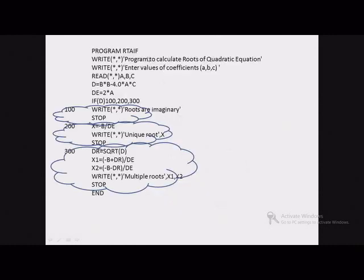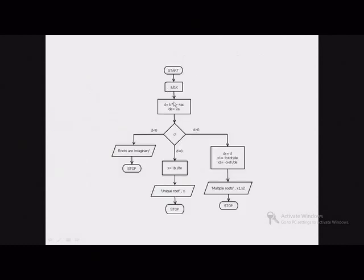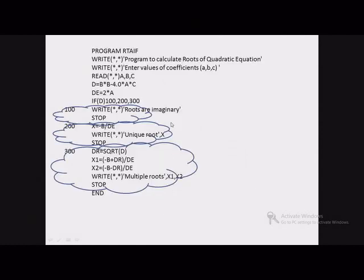Let us move to the program. This program demonstrates how to use the arithmetic if statement — same as the flowchart. We display the message 'Program to calculate roots of a quadratic equation,' then prompt to enter coefficients and accept values of A, B, C. We calculate D, then calculate DE. After that we get the arithmetic if: IF(D) 100, 200, 300. So D is the arithmetic expression and 100, 200, 300 are the three statement numbers.